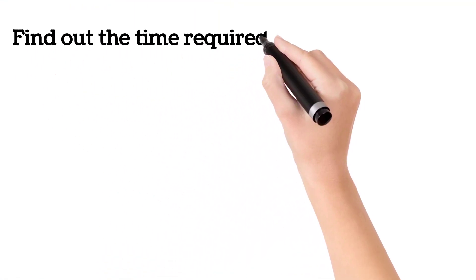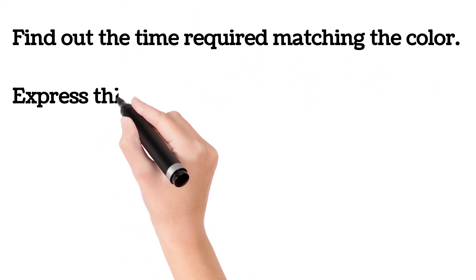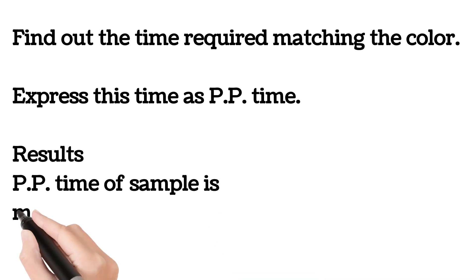Find out the time required matching the color. Express this time as PP time. Results: PP time of sample is ___ minutes.